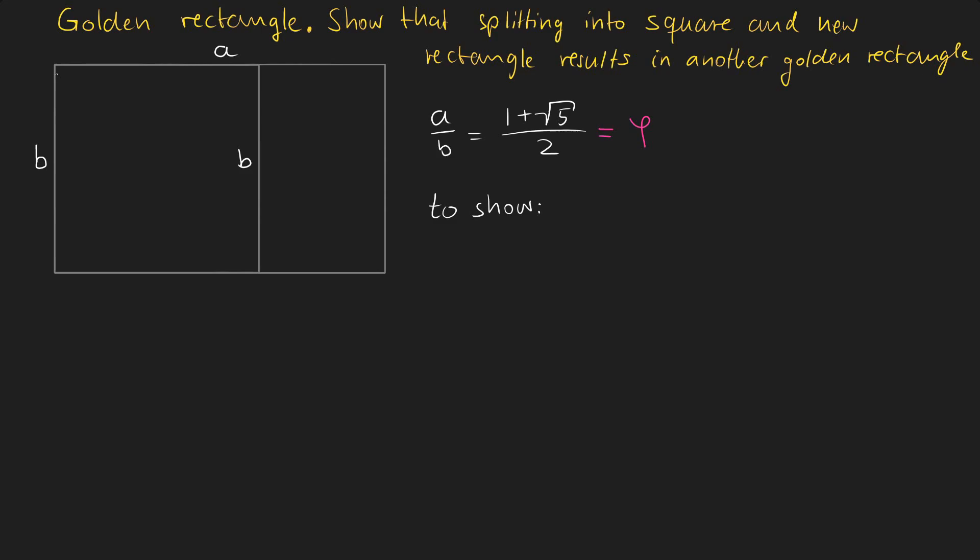And we can easily see that the height of the rectangle is B. And because the whole width of the big rectangle is A and the square has the dimensions B times B, we know that the width of our new rectangle is A minus B. Hence we need to show that B divided by A minus B is the golden ratio.